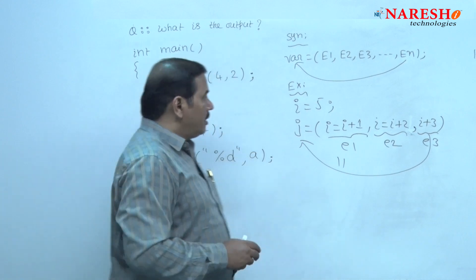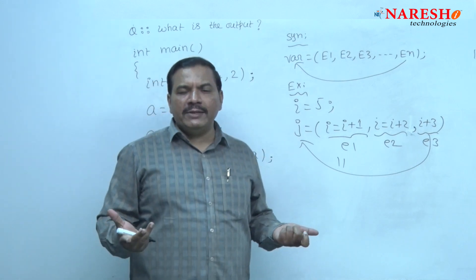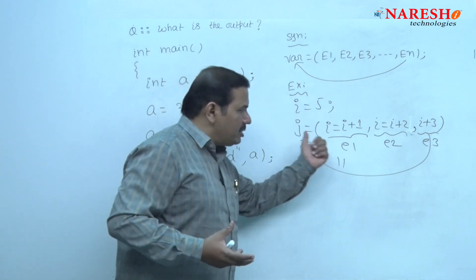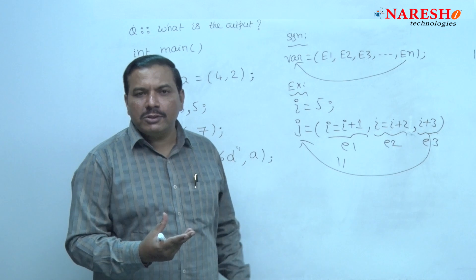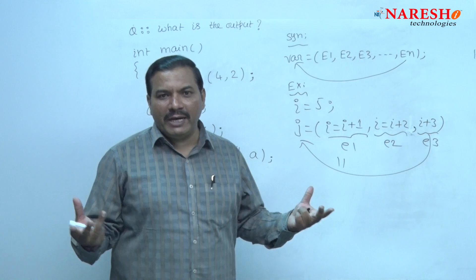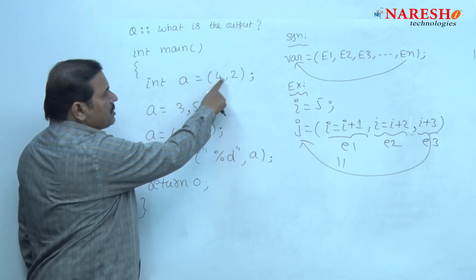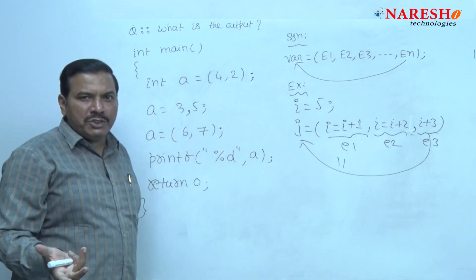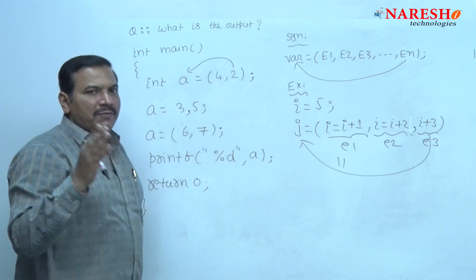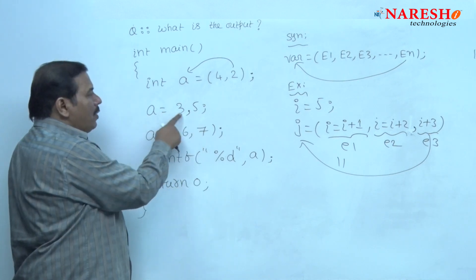Similarly, here the rightmost expression value is 2. For this comma operator, the operands may be constants, variables, or expressions. In this question, the operands for the comma are constants. The value of the first expression and second expression are given, and the rightmost expression value is 2. Hence, after executing that statement, the value of a becomes 2. After executing the other statement, the value of a is 3.